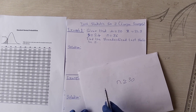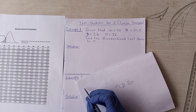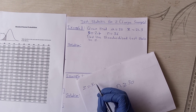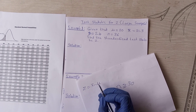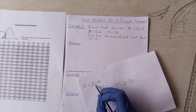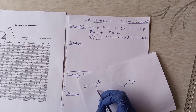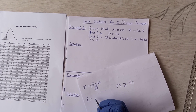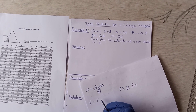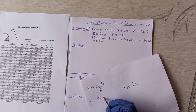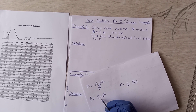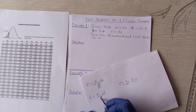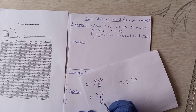The formula for z is: sample mean minus population mean, all over standard deviation divided by root n. For t, the formula is the same: sample mean minus population mean, all over standard deviation over root n.